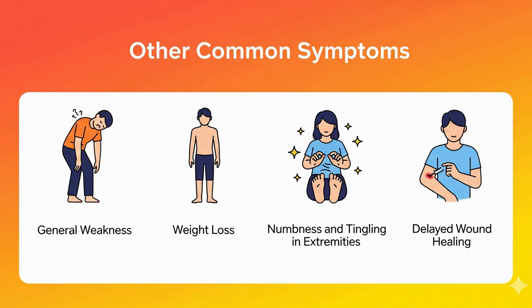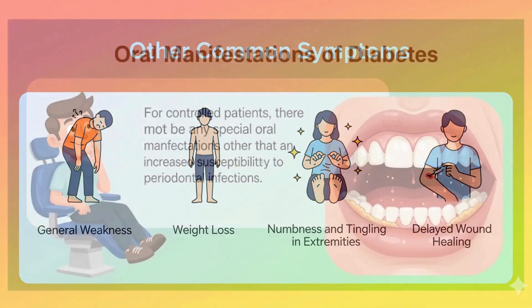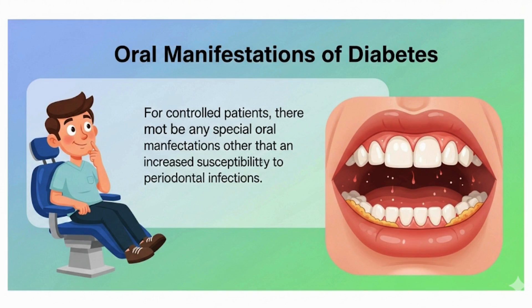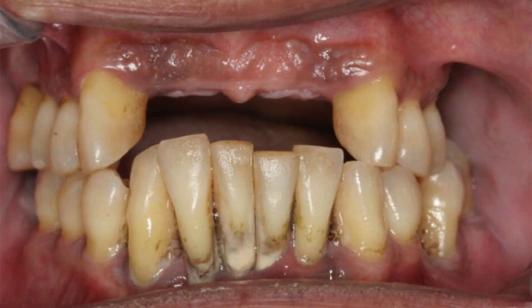Diabetic patients always suffer from delayed wound healing due to microvascular involvement. Regarding the oral manifestations of diabetic patients, especially controlled patients, there may not be any special oral manifestations other than increased susceptibility to periodontal infections. In uncontrolled diabetic patients, you may notice severe gingival recession and thus mobility of the involved teeth, all because of the progression of periodontal disease.